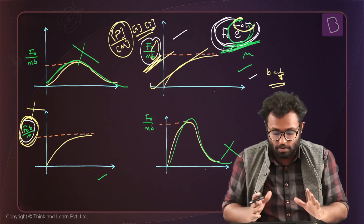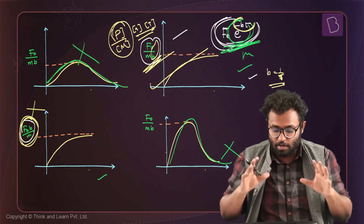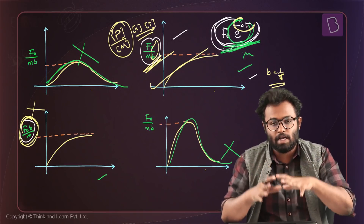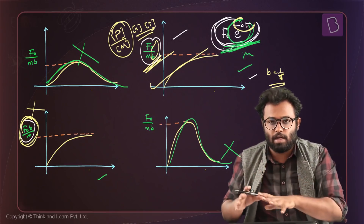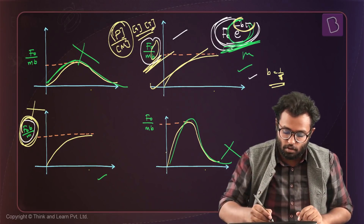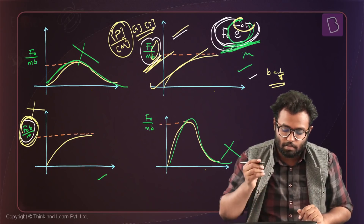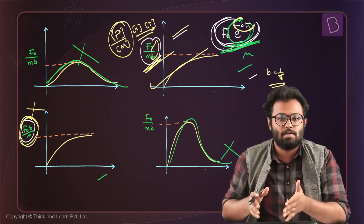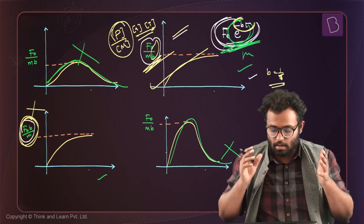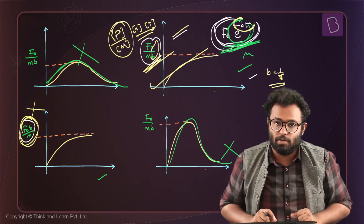So we didn't actually have to find exactly how the curve looks. We just eliminated options and found that only the graph with peak value F₀/MB makes sense as the right answer.